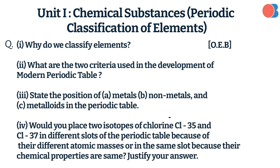Why do we classify elements? What are the two criteria used in the development of the modern periodic table? State the position of metals, non-metals, and metalloids in the periodic table. Would you place two isotopes of chlorine, Cl-35 and Cl-37, in different slots of the periodic table because of their different atomic masses, or in the same slot because their chemical properties are the same? Justify your answer.